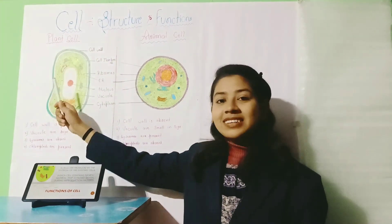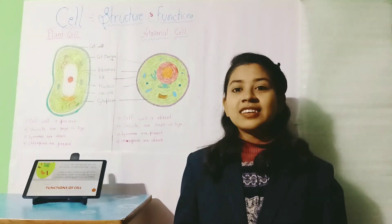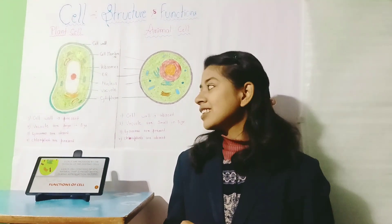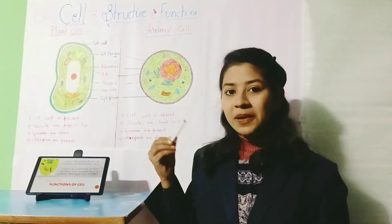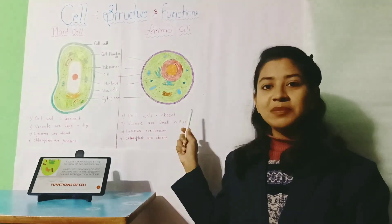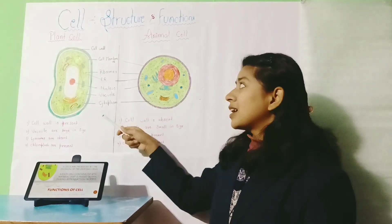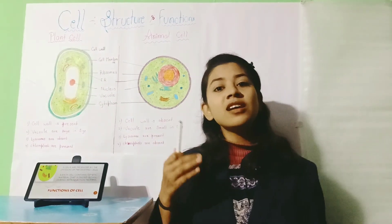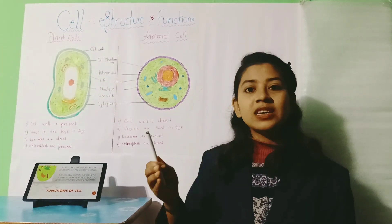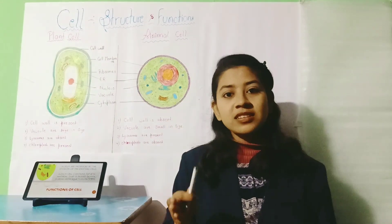Lysosomes are absent in plant cells but present in animal cells. Do you know how plants have green color? Because chlorophyll is a pigment present inside the chloroplast in plants, and due to this, plants have green color — but chloroplast is absent in animal cells. There are also lots of similarities between these two, such as nucleus, plasma membrane, and cytoplasm being present in both.